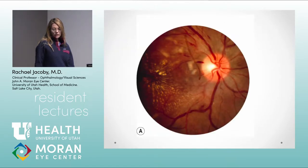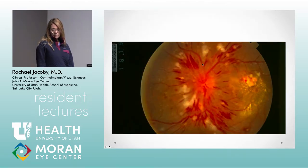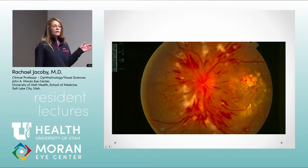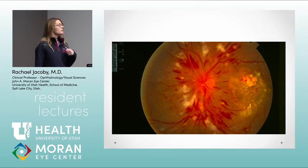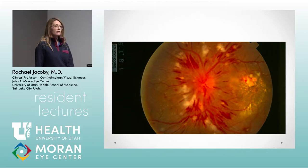Grade 3 shows the disc with sharp clear margins but with exudates, cotton wool spots, arterial irregularities, and flame hemorrhages. Grade 4 shows severe optic nerve edema. Obviously this can be a lot of different things, so you want to keep hypertension on your differential. Check the blood pressure — other things to consider include bartonella and mass lesions. If you see someone like this, check the blood pressure in clinic, and if it's high, send them to the ER.